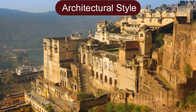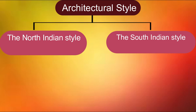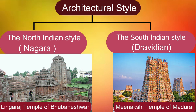The architectural style during this period comprised two main styles: the North Indian style and the South Indian style. The North Indian style was also called Nagara. Lingraj's temple of Bhuvaneshwar is a fine example of this style. The South Indian style was called Dravidian style. The Meenakshi temple is a prime example of Dravidian architecture.